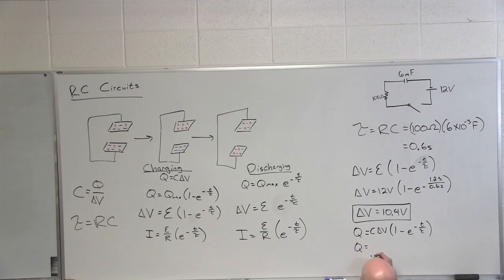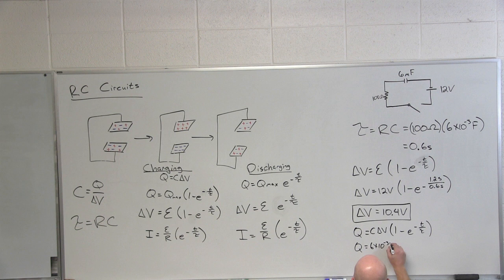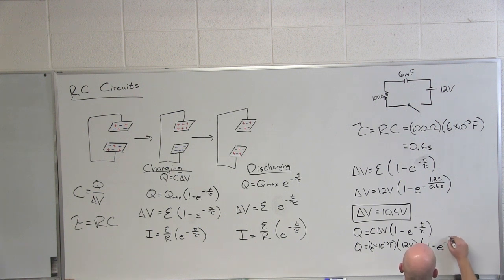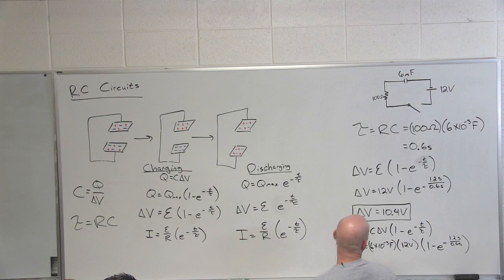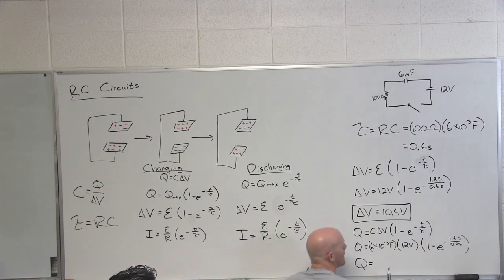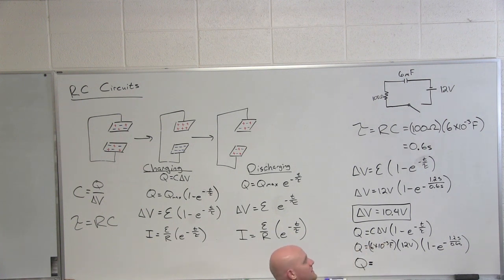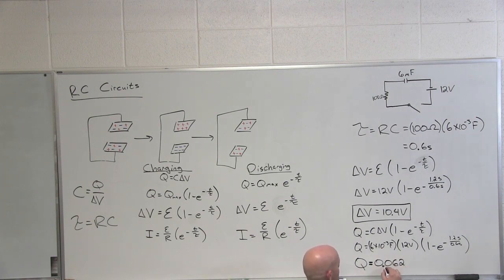So in this case Q equals our capacitance which was 6 times 10 to the negative 3 farads. Potential difference at max would be the 12 volts times 1 to the negative 1.2 seconds over 0.6 seconds. How come you don't use the delta V that you just solved for? If you notice I put C delta V here but what was originally here in the original equation? Q max. Oh it's just that. Yeah so it's Q max we're getting what Q is now but the equation calls right here for Q max which is the total C and delta V that will eventually be across that circuit. 0.062 coulombs.